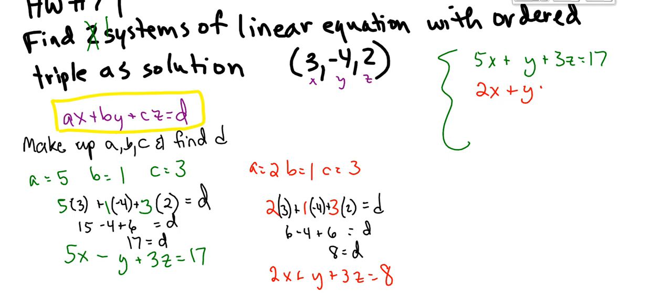And then I'm just going to pick something else as my a, b, and c. So this time I'm going to let a equal 1, b equal negative 2, c equal 4. I've got 1, negative 2, and 4. I'm going to take 1 times 3, plus negative 2 times negative 4, plus 4 times 2. And that's going to equal d. 3 plus 8, plus 8 equals d. And that is 16 and 3, which is 19 equals d.